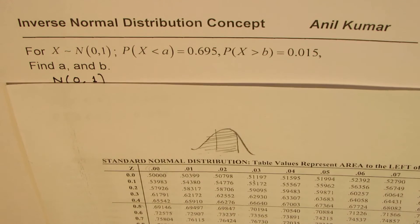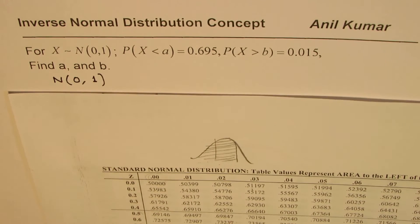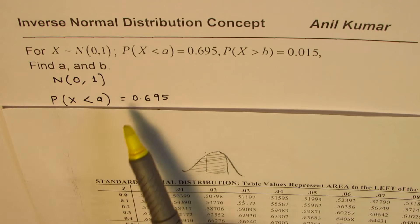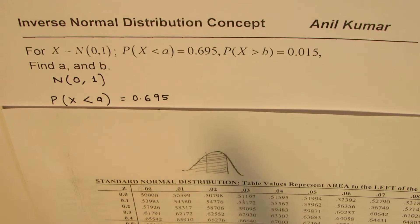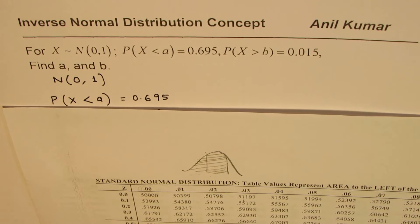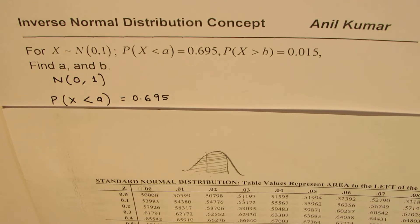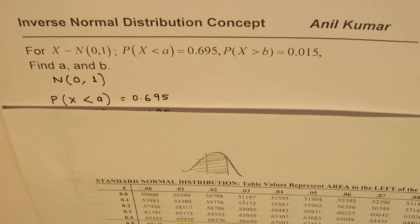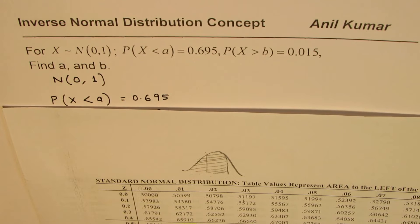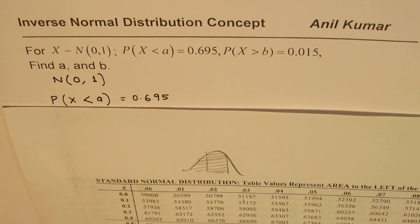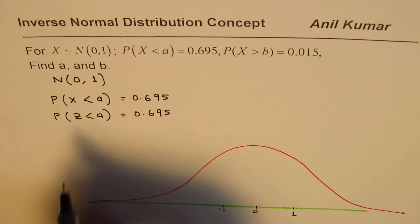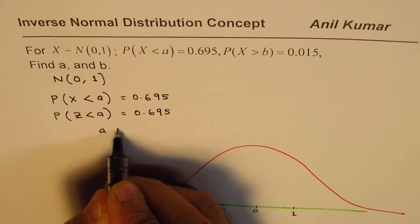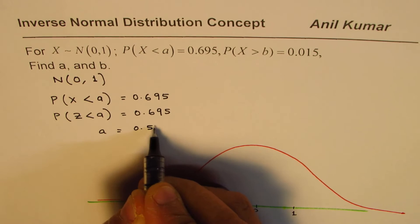In the positive side of our standardized normal distribution table, we will look for 0.695. So we have 0.69 and some of this value works for us. 0.69 gives us the value as 0.51. 0.51 is the z-score. So a is equals to 0.51.